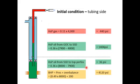Now let's start the calculations. Hydrostatic pressure of the gas: 0.11 × 4,000 ft = 440 psi. Hydrostatic pressure of the oil from the gas-oil contact at 4,000 feet to SSD level at 7,900 feet: 0.36 psi/ft × 3,900 ft = 1,404 psi. Hydrostatic pressure of the oil below the SSD down to the reservoir gives us 36 psi.